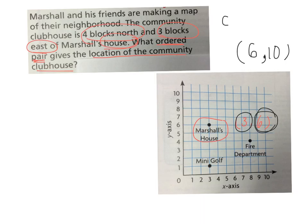Now, that's what I think. Let me check on the map. So here's Marshall's house. I'm going to move four blocks north. One, two, three, four. And I'm going to move three blocks east. One, two, three. Is this 6, 10? Very good.